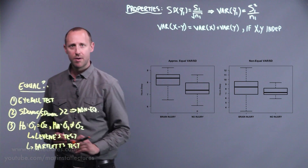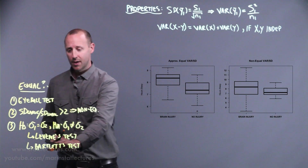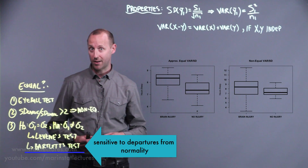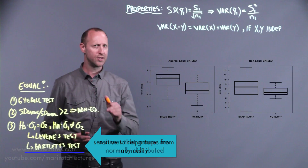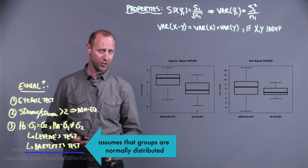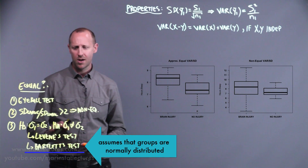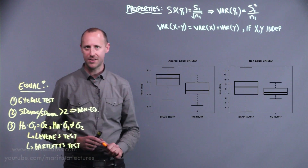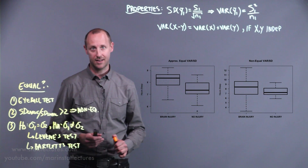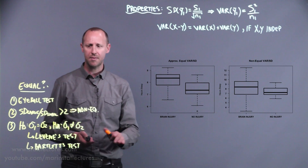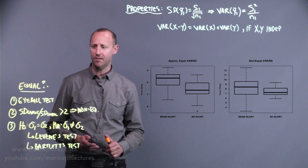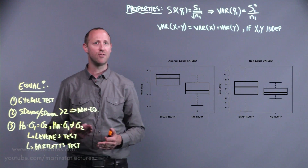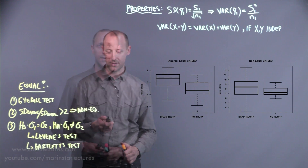One note: Bartlett's test is a little bit sensitive to departures from normality, so it also assumes the two groups are approximately normally distributed. A lot of these tests have slightly lower power, meaning if there is a difference they're less likely to find it. Often we might work with just the rough guide of comparing the two standard deviations and seeing if one is not more than double the other.